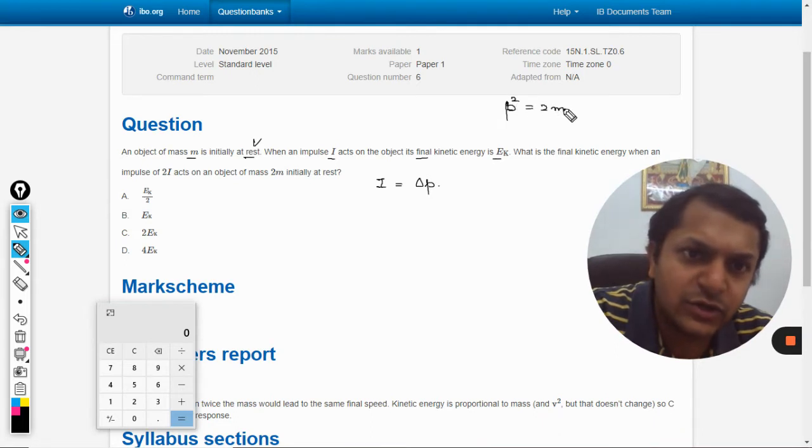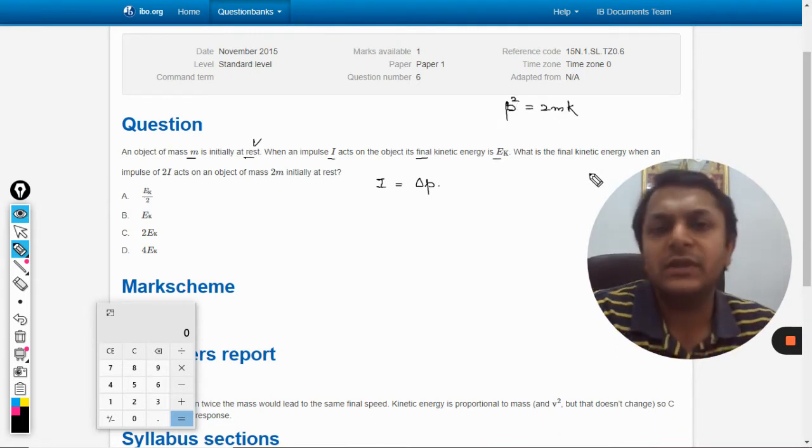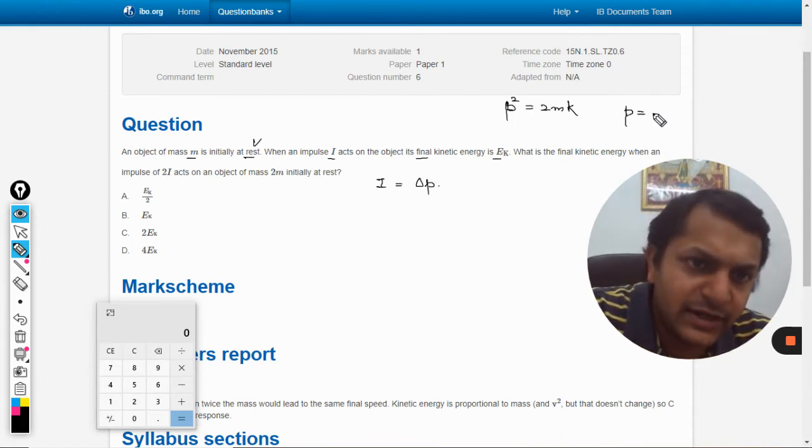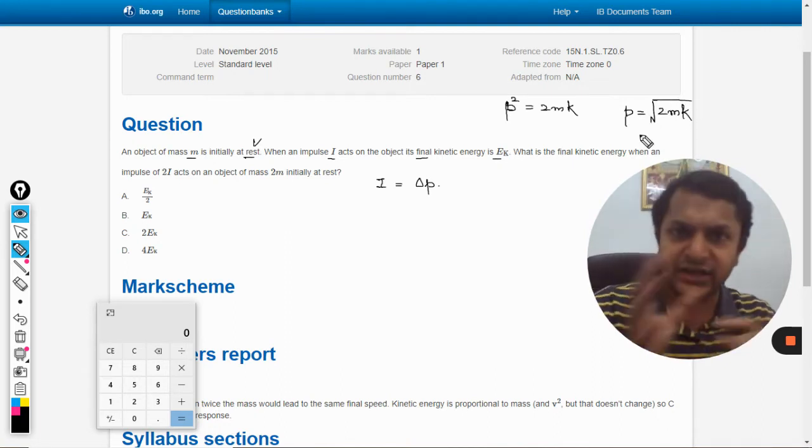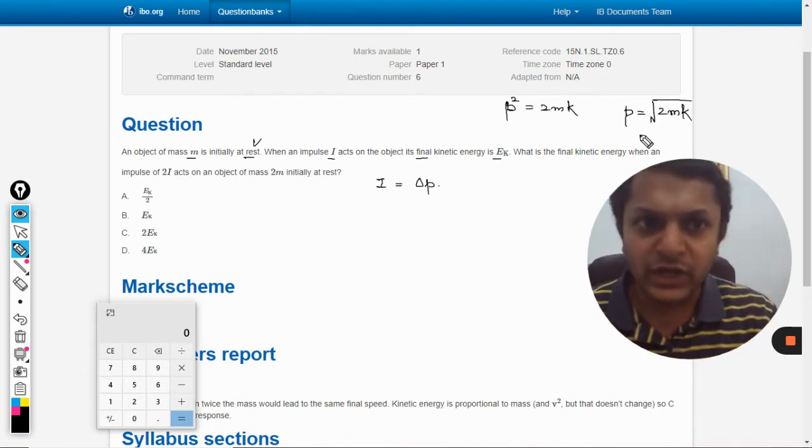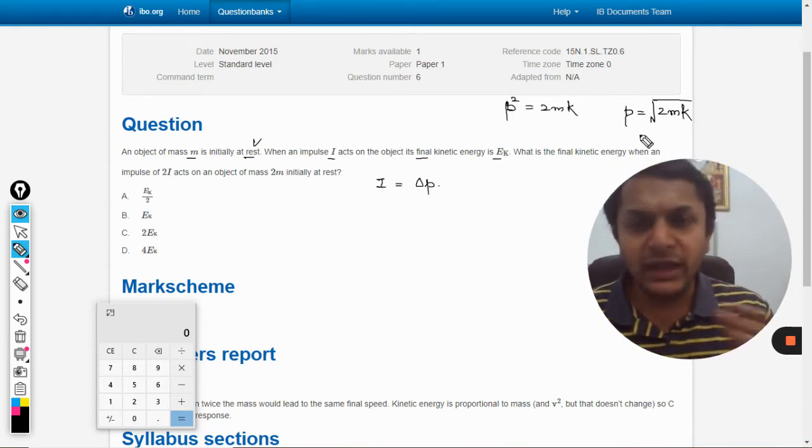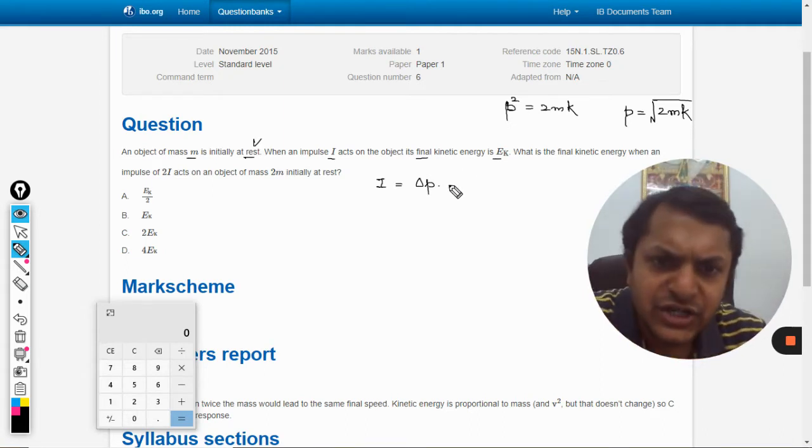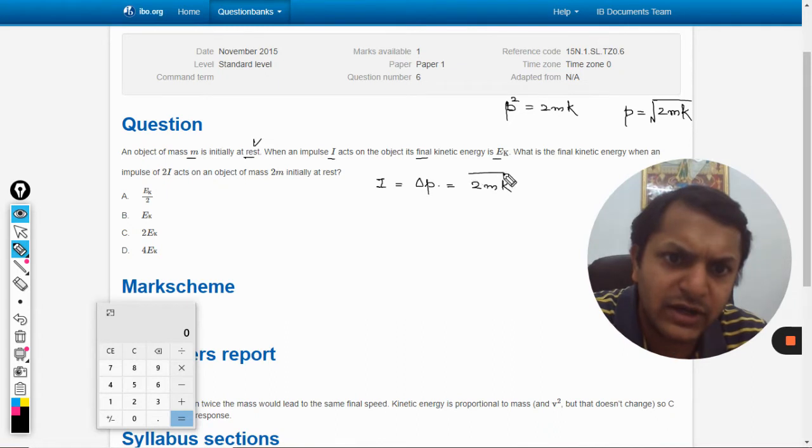We know there is a formula p² = 2mk, a very simple formula. So momentum can be taken as the root of 2mk, where k is the kinetic energy, m is the mass of the body, and p is the momentum. We'll use this formula to relate impulse and kinetic energy: i² = 2mk.